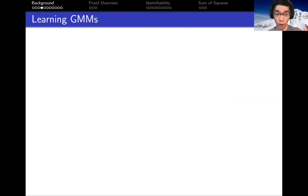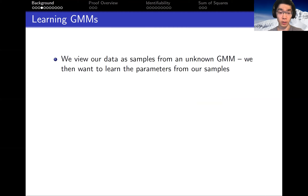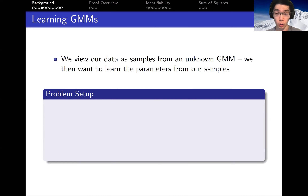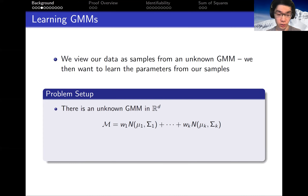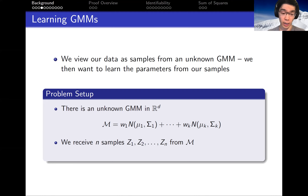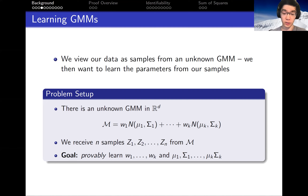A common problem that is often studied is the problem of learning GMMs. We view our data as samples from an unknown GMM, and our goal is to learn the parameters of that GMM from the mixture m. More formally, there is some unknown GMM with parameters as shown, and we receive n samples from the mixture m. Our goal is to learn the weights w1 through wk, and the means and covariances mu1 through muk and sigma1 through sigma k.